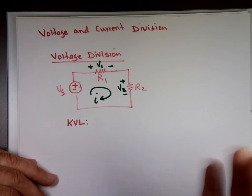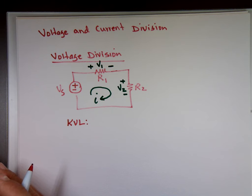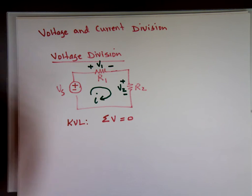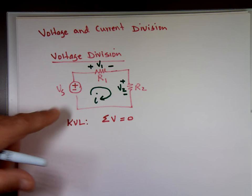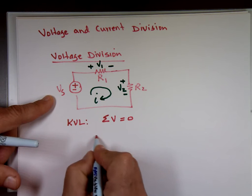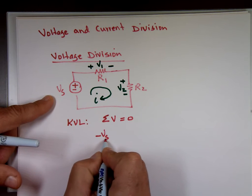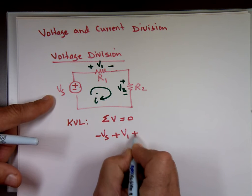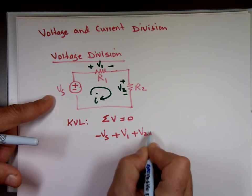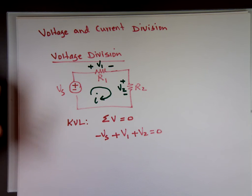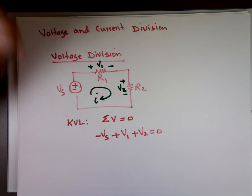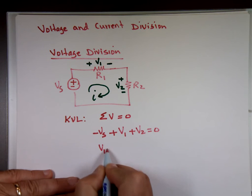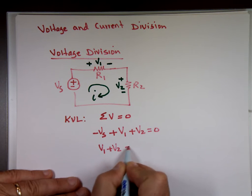And if I use KVL, there's only one loop here, one closed loop. If I use KVL, the sum of the voltages in a closed loop is 0. The algebraic sum of all the voltages is equal to 0. That's KVL. So let's do a KVL, marking this minus to plus. That's minus Vs plus V1 plus V2 is equal to 0. That means V1 plus V2 equals Vs.